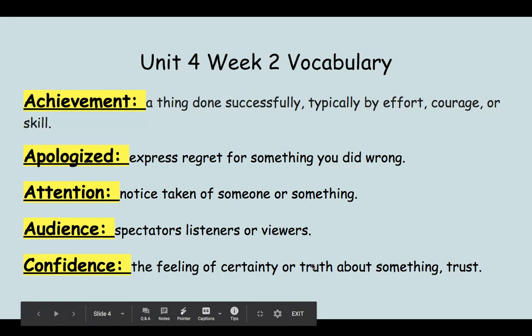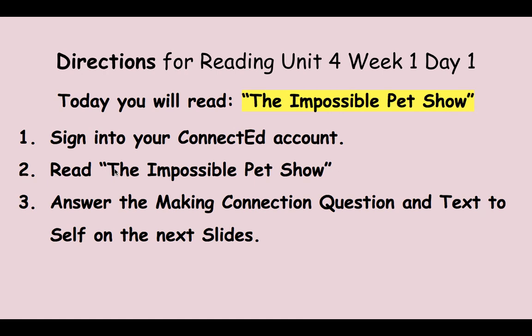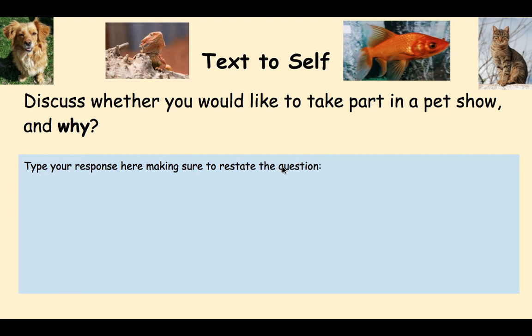Here's our vocabulary again with all the words and their definitions. For this week, you're going to read the Impossible Pet Show — sign into your ConnectED account and read it. Then answer the questions on the next slide, looking back in the text to answer: how did Daniel use what he knows to help others? You can't just guess — use things from the story to support your answer, restating the question. Lastly, answer the text-to-self question: discuss whether you would like to take part in a pet show and why. Type your response in the blue area, restating your question.